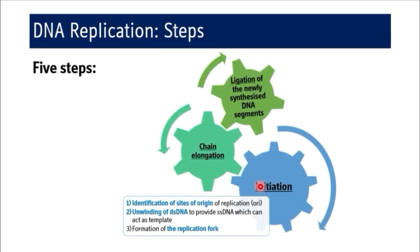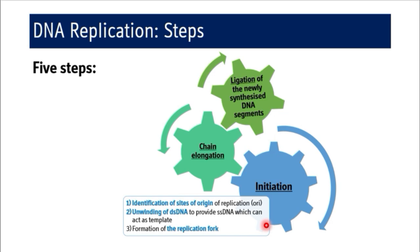What are the steps in DNA replication? There are a total of five steps and majorly three phases of DNA replication. The three phases are: the initiation phase, the chain elongation phase, and ligation of the newly synthesized DNA segments. In the first phase there are three steps: identification of the site of origin of replication, unwinding of double-stranded DNA to provide single-stranded DNA as a template, and formation of the replication fork.